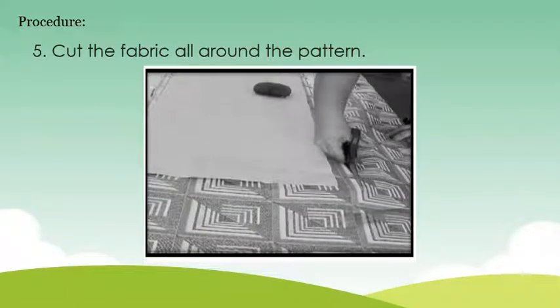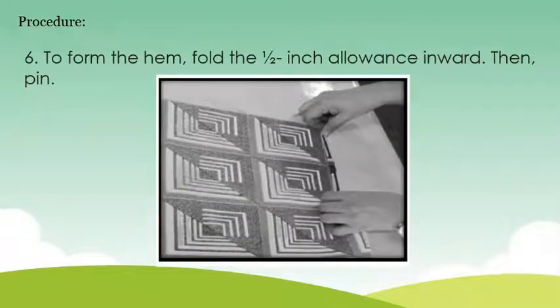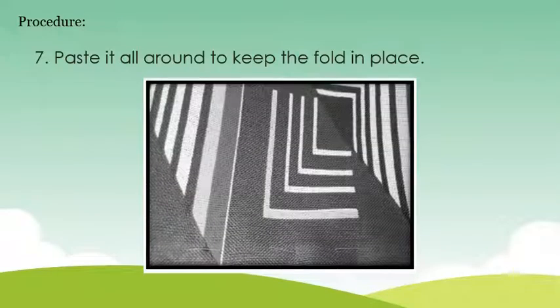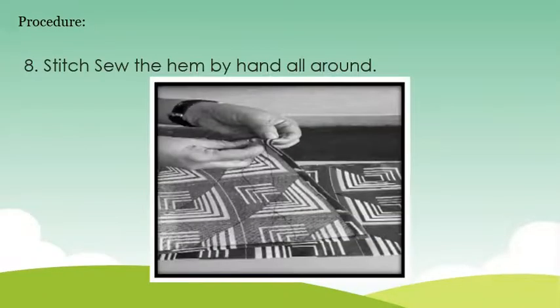Number six: to form the hem, fold the one-half inch allowance inward then pin. Number seven: paste it all around to keep the fold in place. Number eight: stitch sew the hem by hand all around.